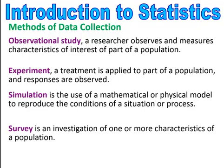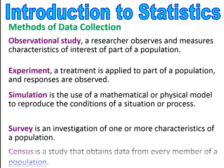The next method is a survey — an investigation of one or more characteristics of a population. And lastly, a census is a study that obtains data from every member of the population, so a census will have the entire population in its study.